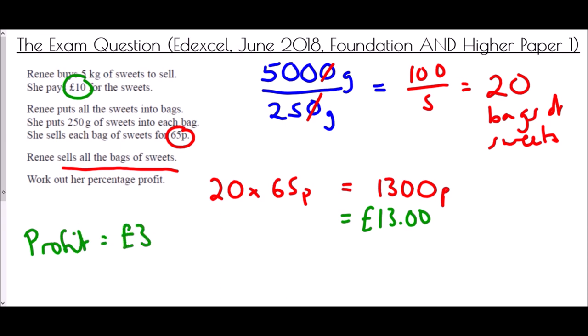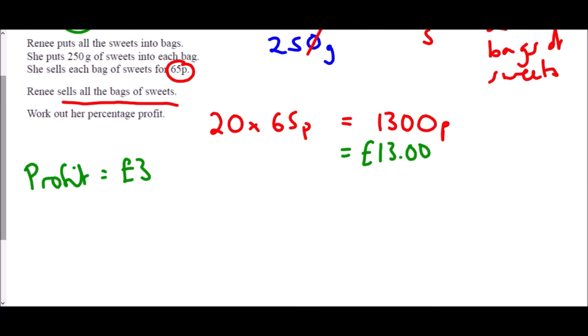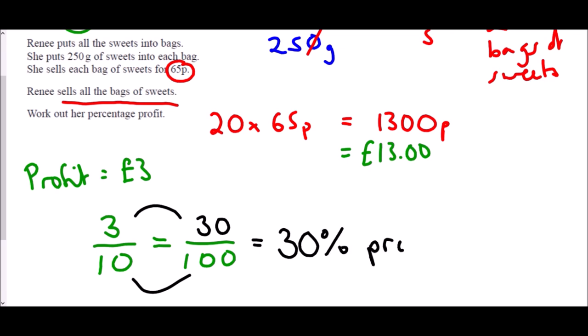So if I now want to look at the percentage profit, I will take the profit that she made and divide it by the cost. And so 3 over 10. If I want to turn that into a percentage I want to make it a fraction over 100. So I've multiplied by 10 at the bottom. I need to multiply by 10 at the top. That is 30. And so she made a 30% profit.